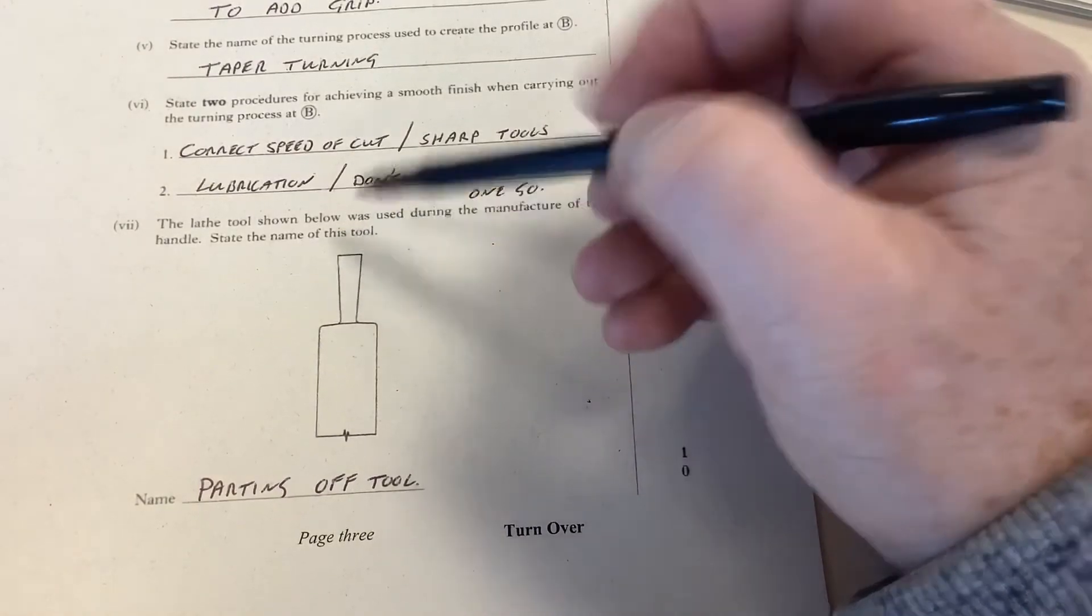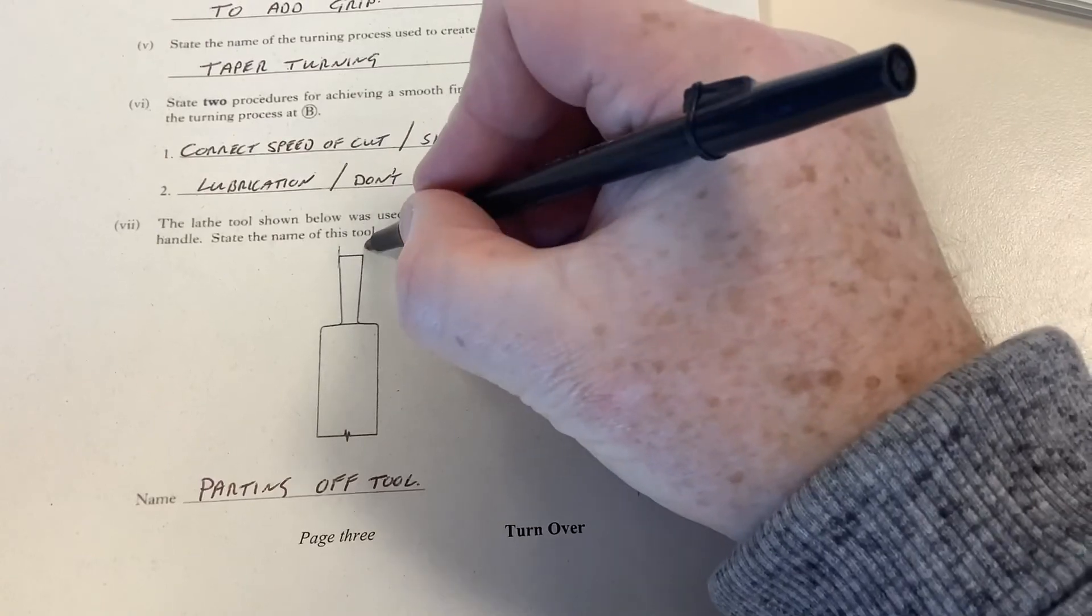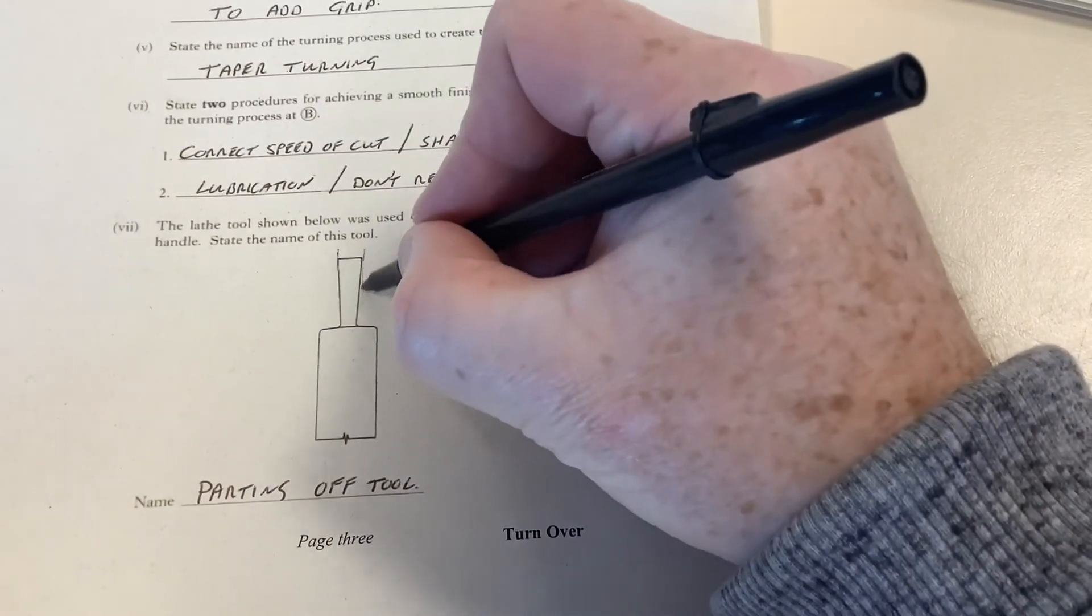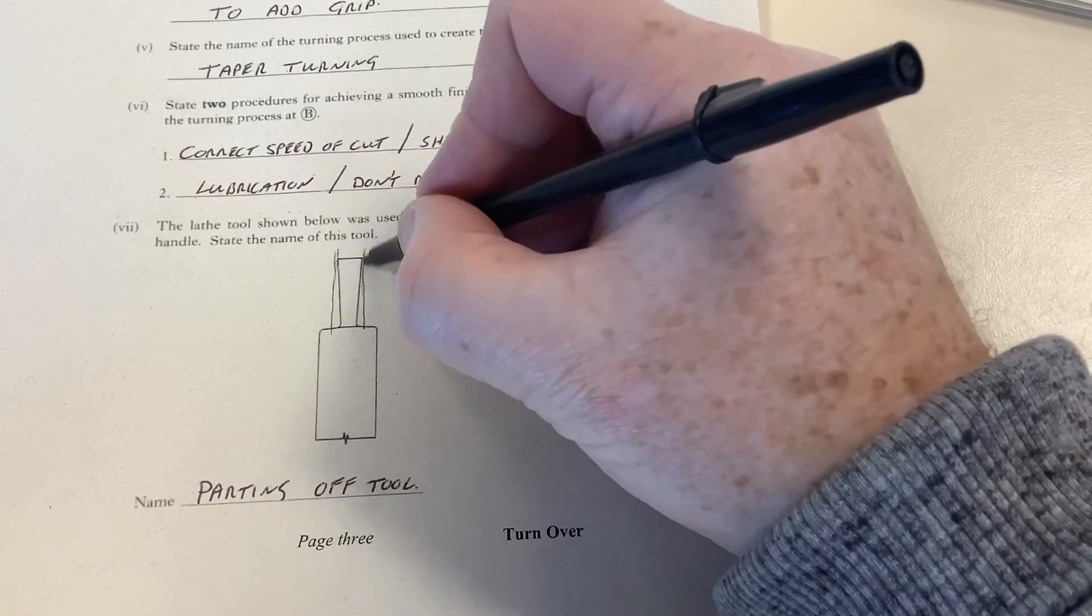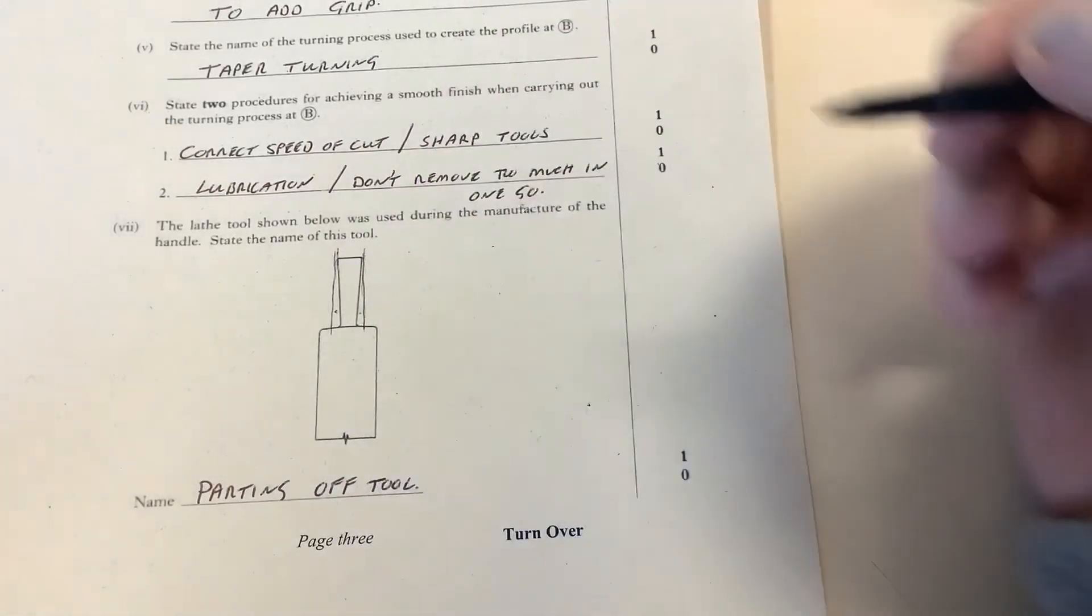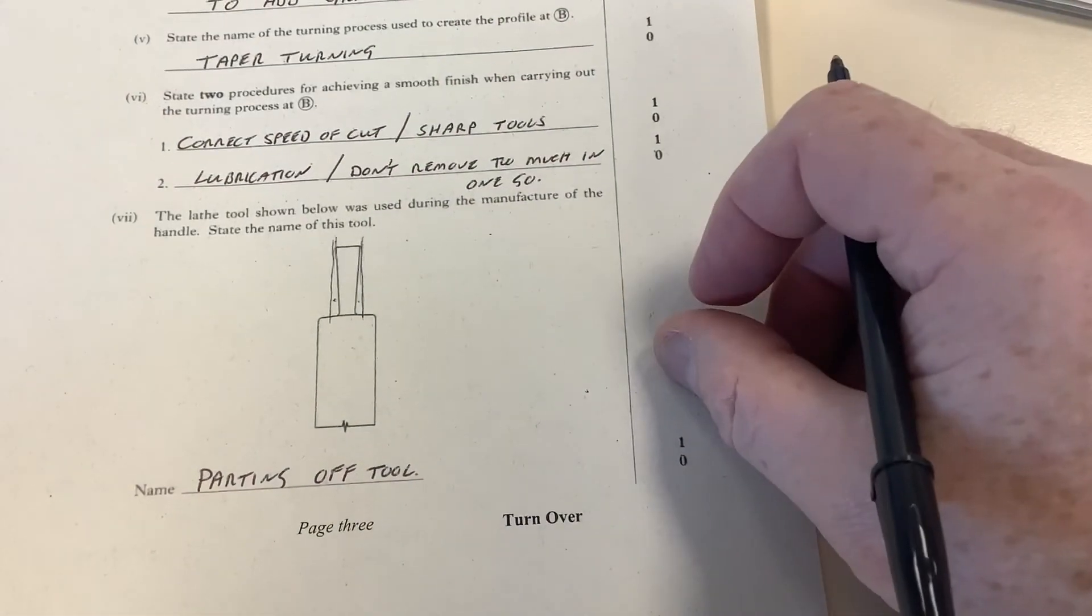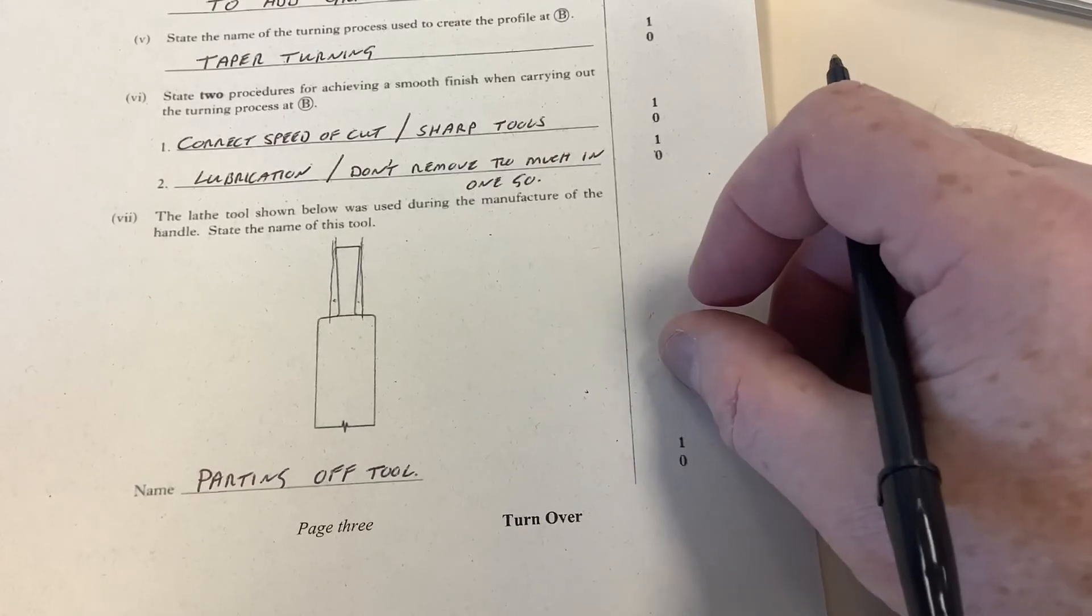That taper allows it to cut into the metal and create a cut, but it doesn't then bind against the side of the blade. Do you see how that part there is left open? So there's a clearance there. That's a parting off tool. These are some basic questions and answers.